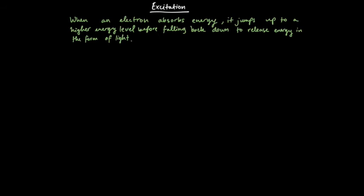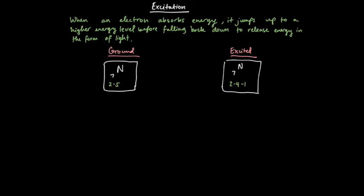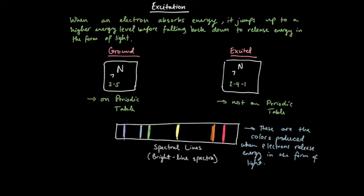Now we're going to get into excitation. And when an electron absorbs energy, it jumps up to a higher energy level before falling back down to release energy in the form of light. And here we have two states, the ground state and the excited state for nitrogen as our example. And if you look at configurations for nitrogen, you can see it goes from 2, 5 in its ground state to 2, 4, 1 as an excited state example.